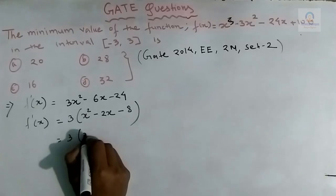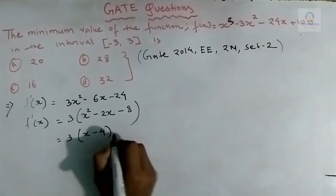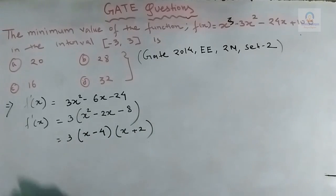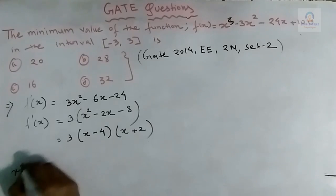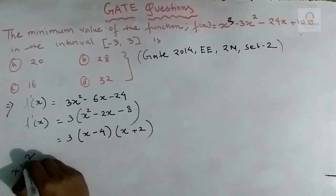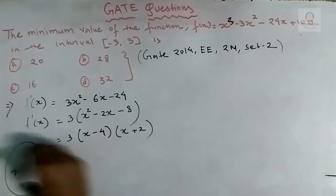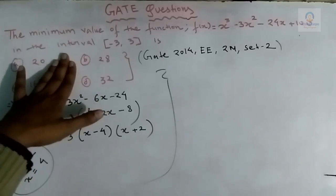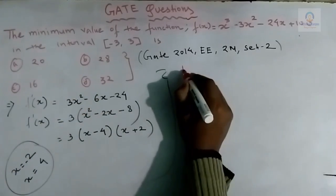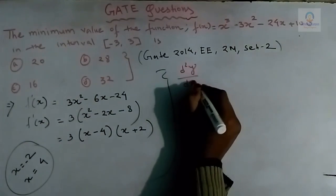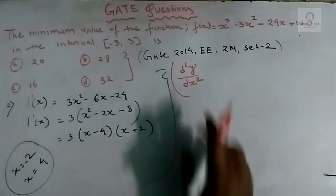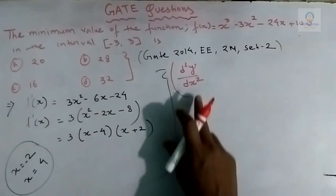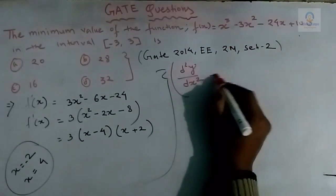By middle-term factorization: (x - 4)(x + 2) = 0, so the critical points are x = -2 or x = 4. Since we need the minimum value (not the point of maxima or minima), it is not required to calculate the second derivative d²y/dx².